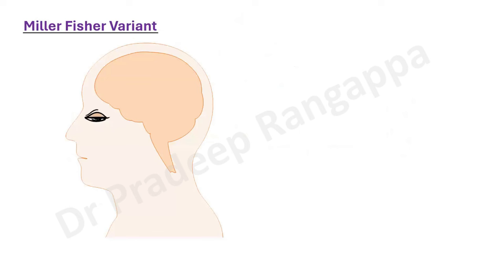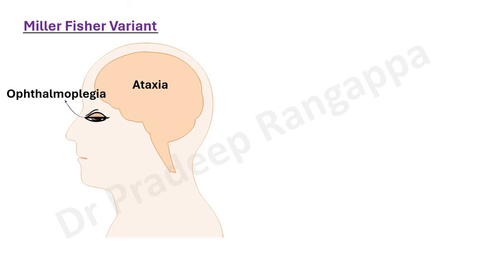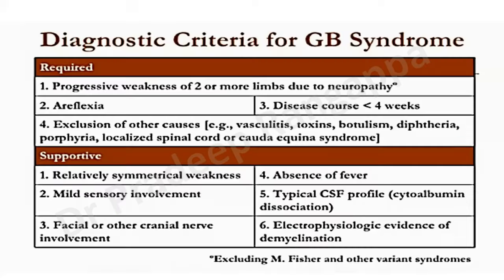In the Miller-Fisher variant, there can be ataxia along with the typical symmetrical muscle weakness, areflexia, and albuminocytological dissociation. They can have central manifestations like ataxia and ophthalmoplegia. There is a variant called Bickerstaff encephalitis, where there is brainstem involvement — called the Bickerstaff variant of Guillain-Barre. These are some of the distinctive variants of Guillain-Barre syndrome.